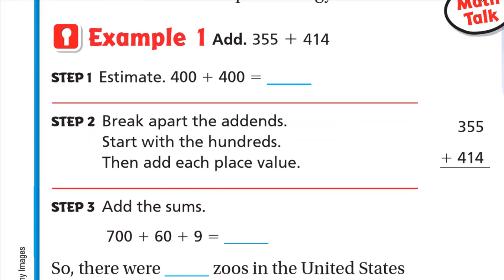Example one: we will add 355 plus 414. First, let's estimate. For 355, look at the digit to the right of the hundreds place, which is 1. One is a weak digit, so the 3 stays as 300. For 414, look at the digit to the right, which is 1. One is weak, so the 4 stays as 400. So 400 plus 400 is 800 — our answer should be close to 800.